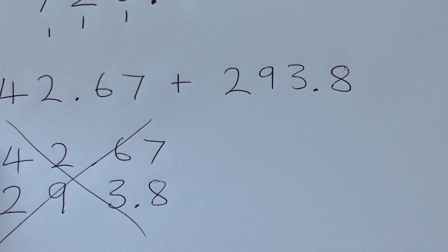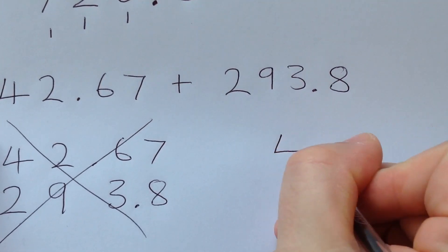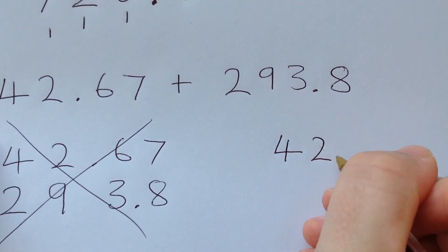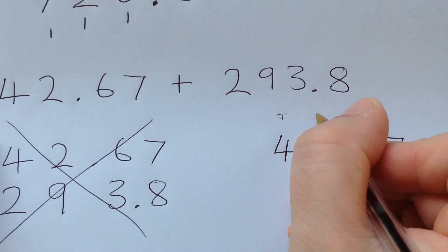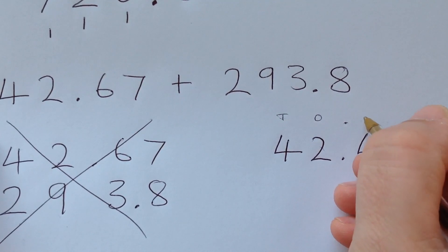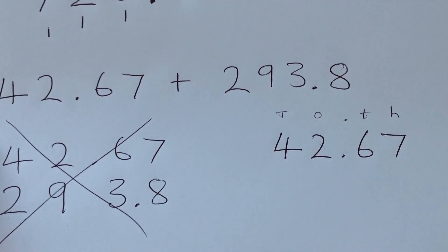So if I put 42.67, which is fine, then I've got my tens, my ones, my decimal point, my tenths, and my hundredths. That's fine.